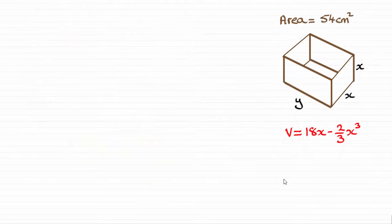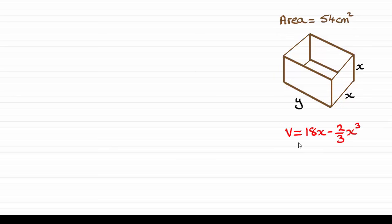For example, suppose we had an open cuboid with these dimensions x, x and y, and it had a fixed surface area of 54 cm squared. Then the volume of the box can be shown to be equal to this equation here.